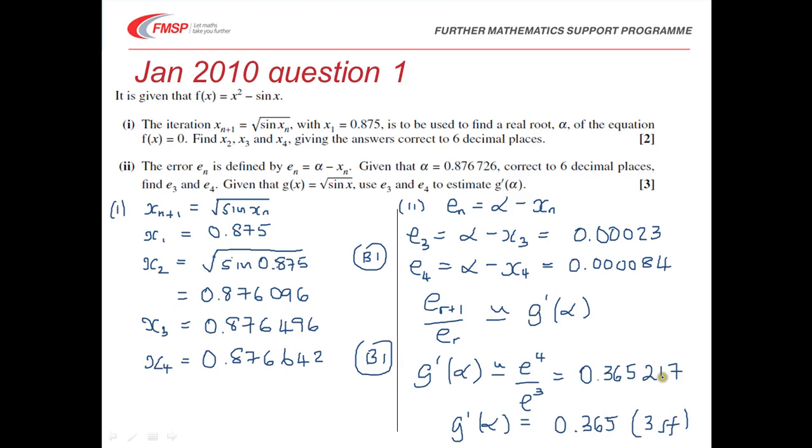In terms of the marks for that bit, as long as you've got one of these subtractions here from your answers, you've got a B1 mark. Once you use this relationship to divide the ratio e_4 over e_3, you've got a method mark, and then you've got an accuracy mark at the end for your answer.